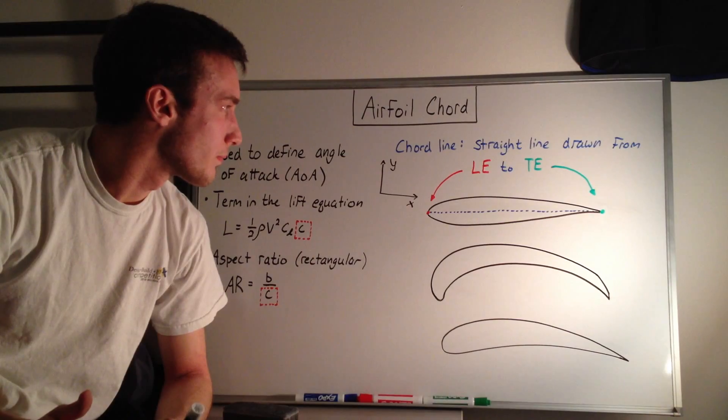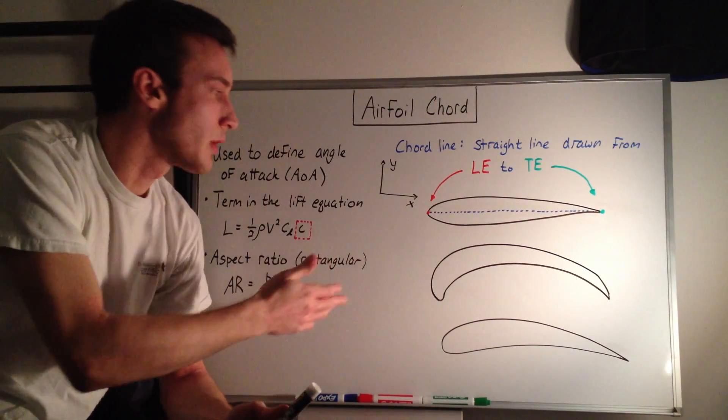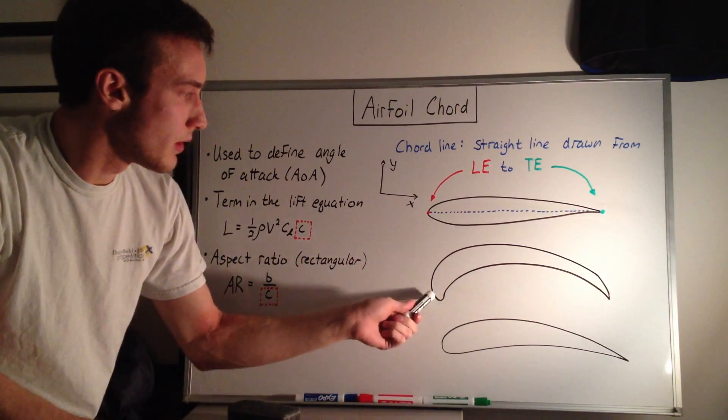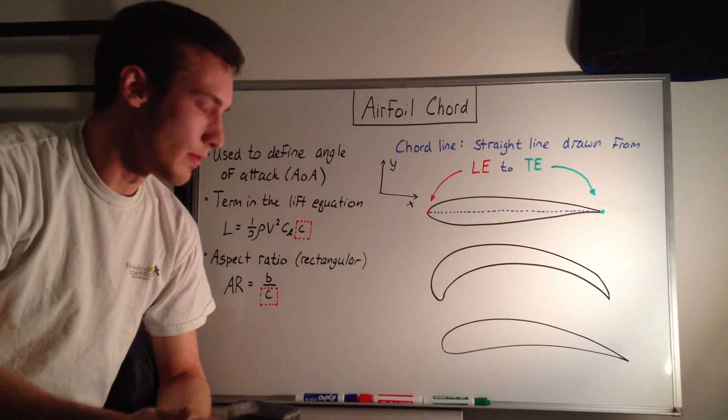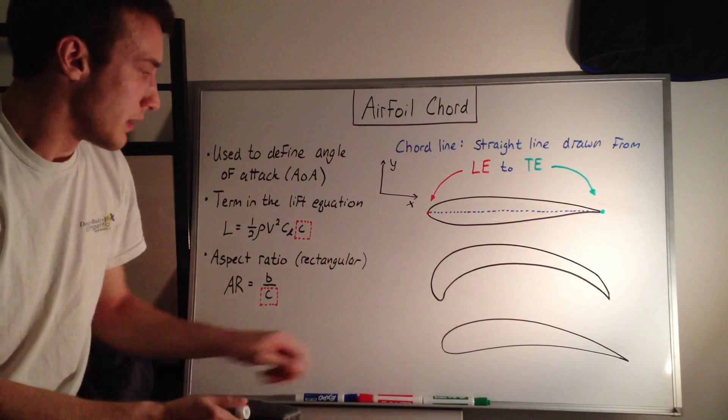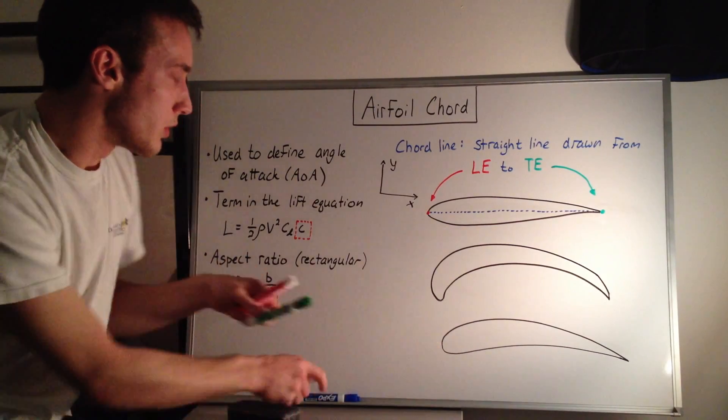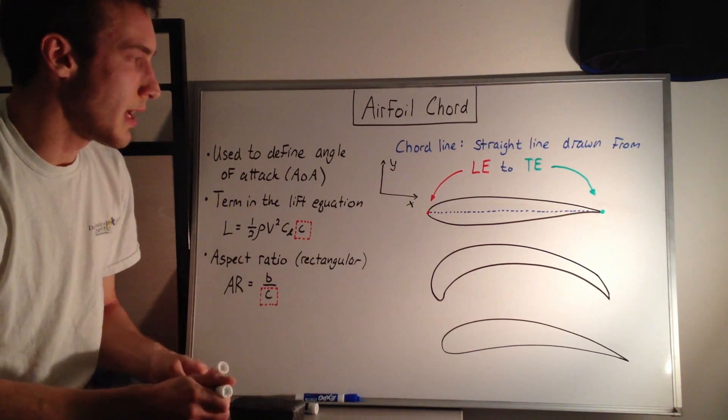One thing that you might come into a problem with is if you get an airfoil that's shaped like this, which is common for turbine blades, it's a highly cambered airfoil. If you say that the leading edge is the most forward x-point, and the trailing edge is the most aft x-point,